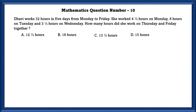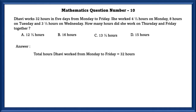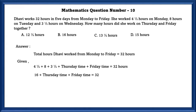Mathematics question number 10. Davi works 32 hours in 5 days from Monday to Friday. She worked 4½ hours on Monday, 8 hours on Tuesday, and 3½ hours on Wednesday. How many hours did she work on Thursday and Friday together? Total hours from Monday to Friday is 32 hours. 4½ plus 8 plus 3½ equals 16. So 16 plus Thursday's time plus Friday's time equals 32. Therefore she worked 16 hours on Thursday and Friday.